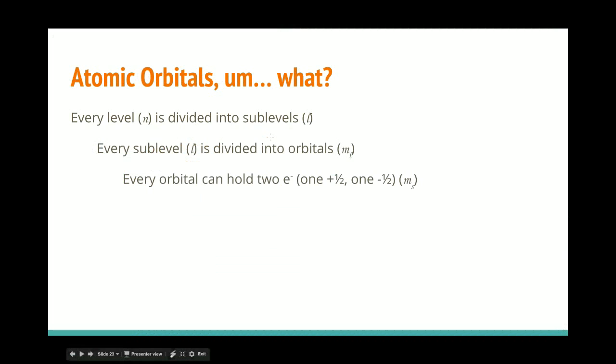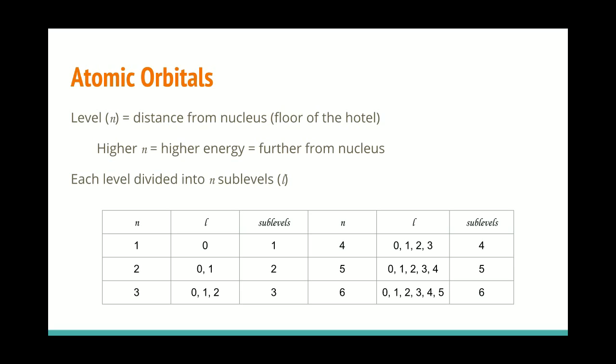So for the atomic levels, n the orbital gives you the distance from the nucleus. So you can think of it as like the floor of a hotel. And you have the ground floor, the first floor, the second floor. I'm thinking European. The ground floor, then a floor above that, then a floor above that. Of course, n can only equal one.